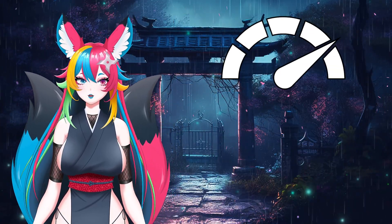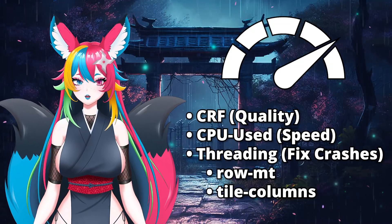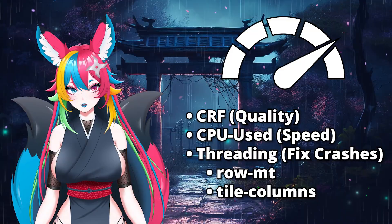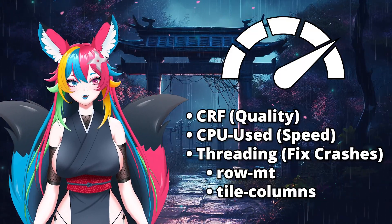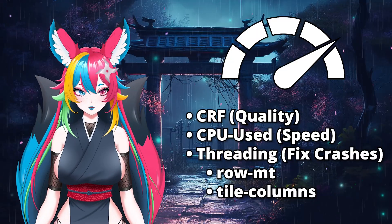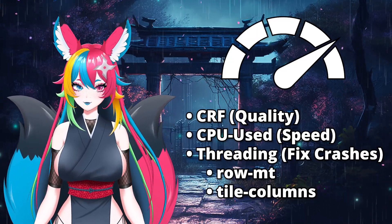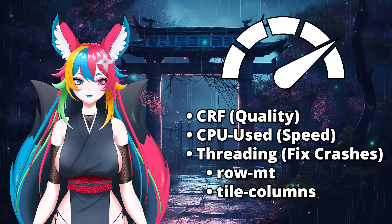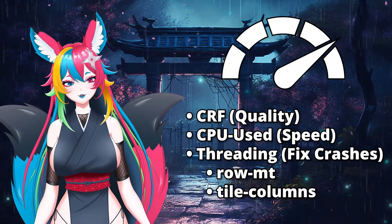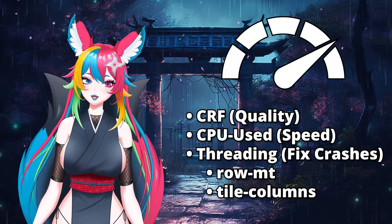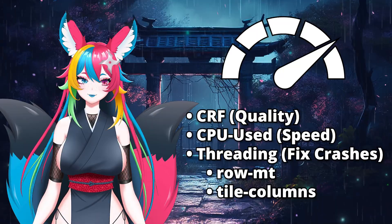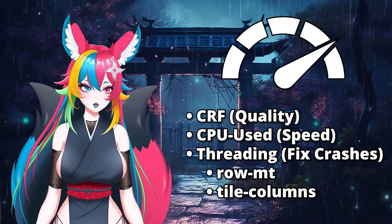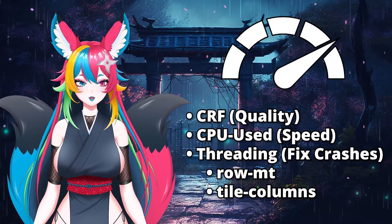The simplified knobs you need to worry about — and there's only three. CRF is your quality knob: the lower the number, the sharper it will be but with bigger files; the higher the number, the smaller the file but grainier and more compressed. CPU-used is your speed switch: lower means better detail but more CPU usage; higher is easier on your PC but less detail. The last one is threading — row-mt and tile-columns — which lets your CPU split up the work. If OBS is crashing, set them both to zero.